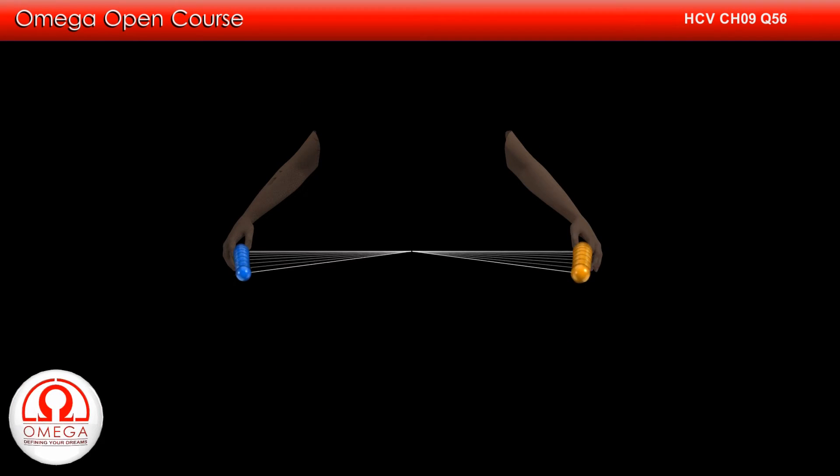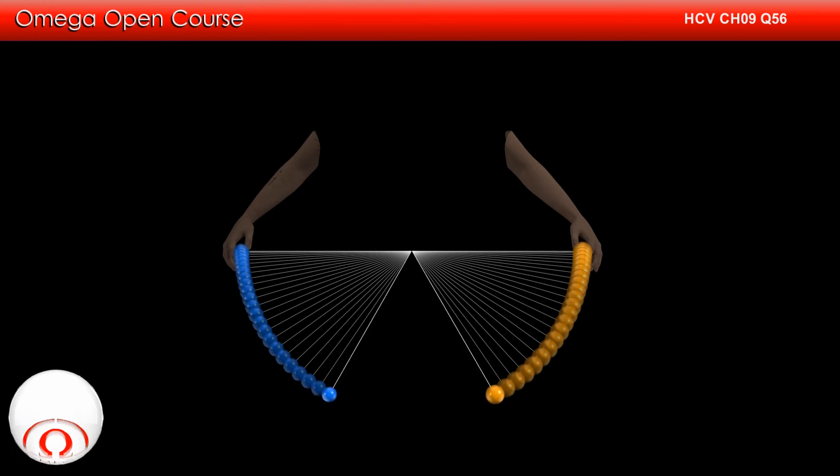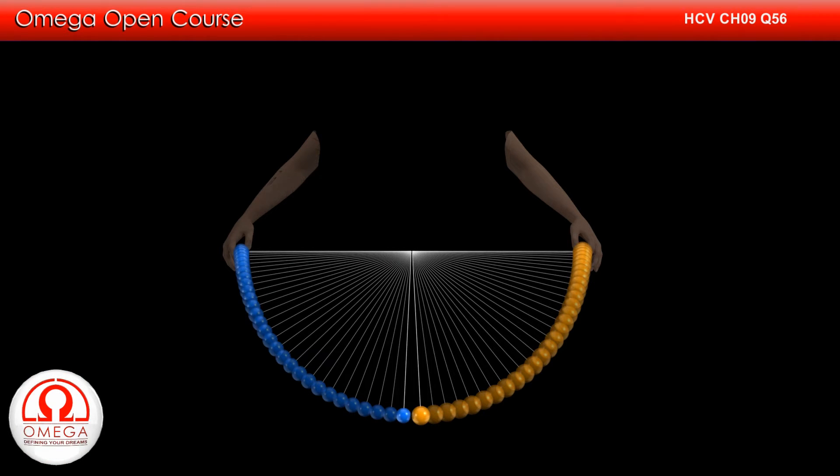When the balls are released, both of them fall by height L. The kinetic energy gained by the balls is equal to the work done on them by gravity. Therefore, half mv squared is equal to mgl. This implies v is equal to root 2gl.